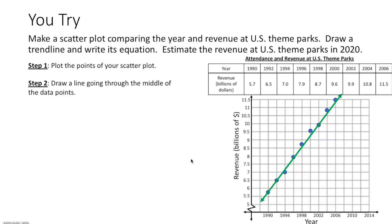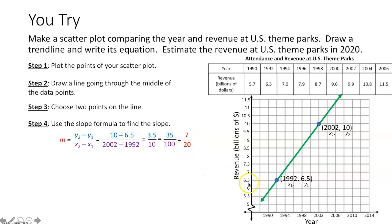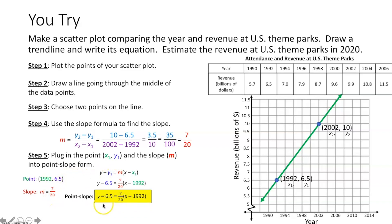Draw a trend line through these points as best as you can. To create the equation, pick two points on the line. Using the slope formula — y₂ - y₁ over x₂ - x₁ — plug in the two points, simplify, and get 35/100, which simplifies to 7/20. The slope of the trend line is 7/20. Now create the equation using point (1992, 6.5) and slope 7/20, plugging into point-slope form: y - 6.5 = (7/20)(x - 1992).